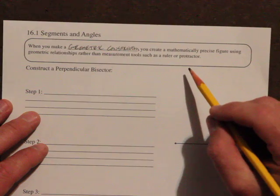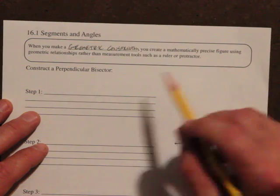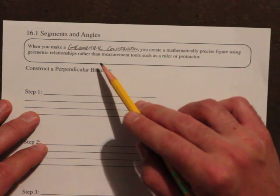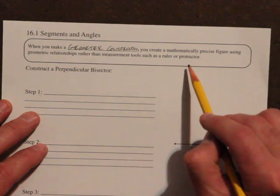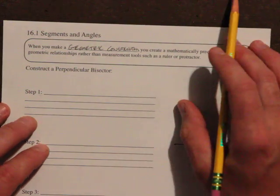You create a mathematically precise figure using geometric relationships rather than measurement tools such as a ruler or protractor.